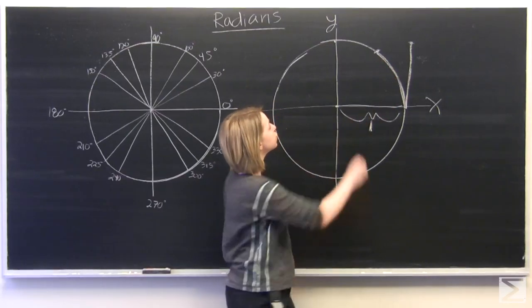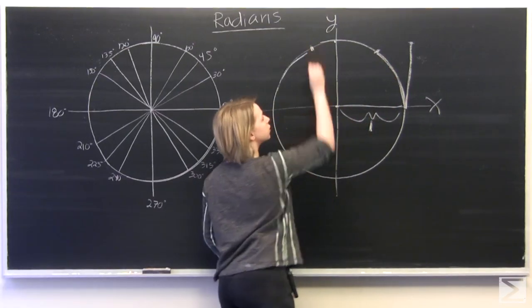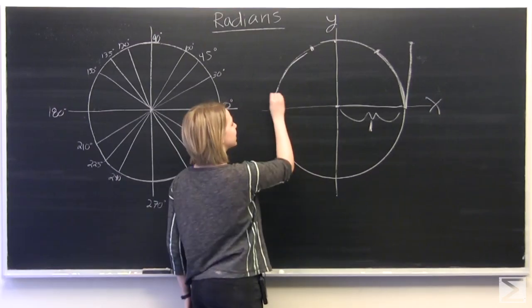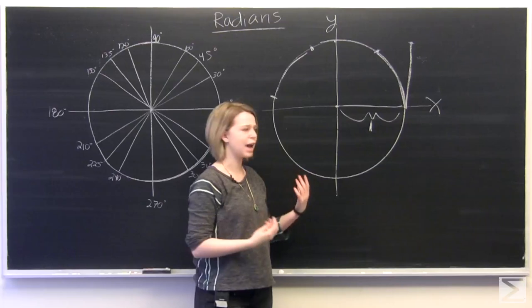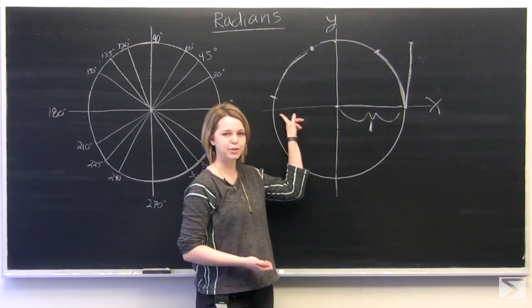And if we multiplied that by 2, we'd get to about here. And if we multiplied that by 3, we'd get to about here. Well, that's kind of useful. 3 times a radian equals almost half of a circle.